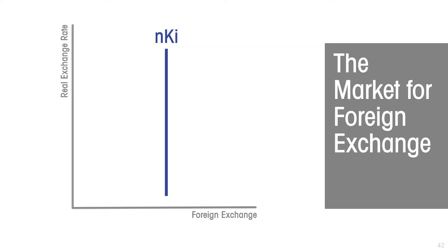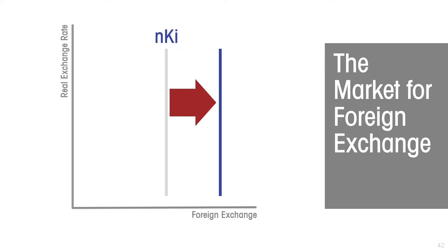It doesn't mean that net capital inflows won't change. For example, they'd be affected by interest rates in the local economy, because interest rates determine the earnings from the investment. If there was an increase in net capital inflows for whatever reason, we show that as a shift of the NKI curve to the right. That might have come about because of an increase in local interest rates at a time when international interest rates have not increased by the same amount. So that's the part of the foreign exchange market that comes from capital flows.